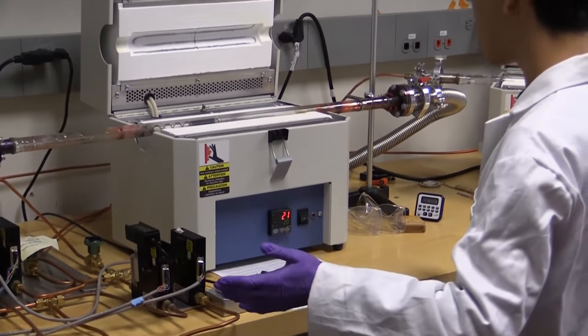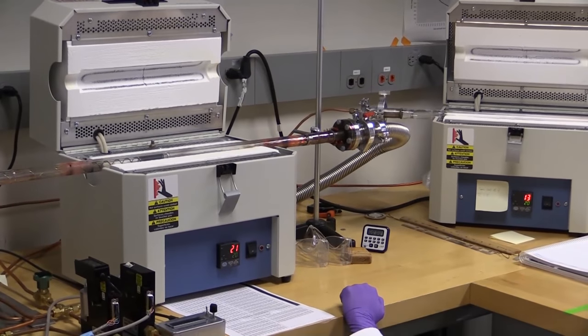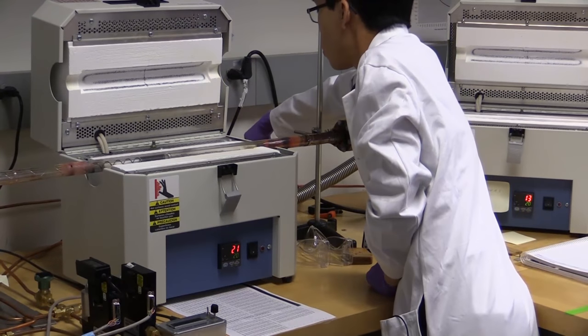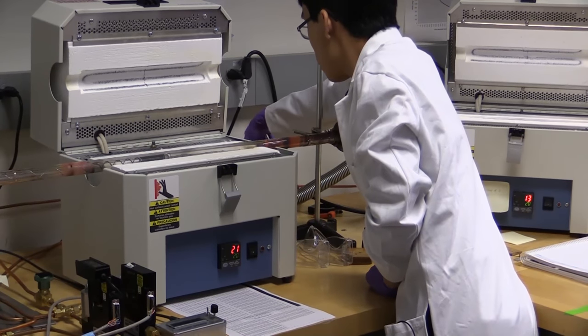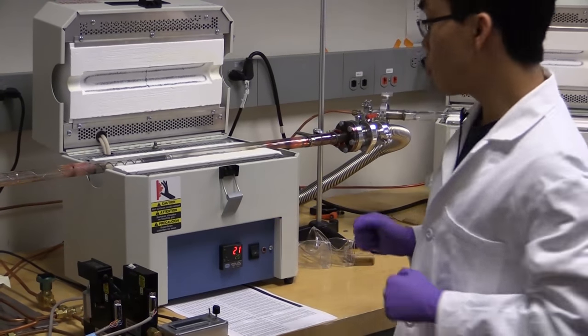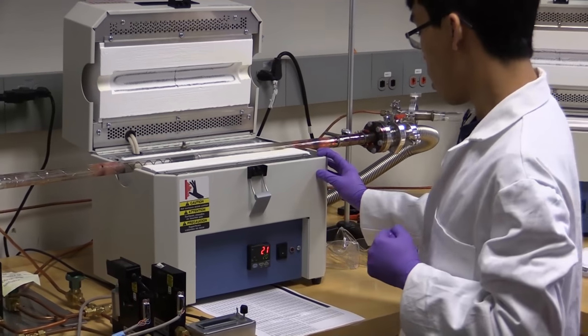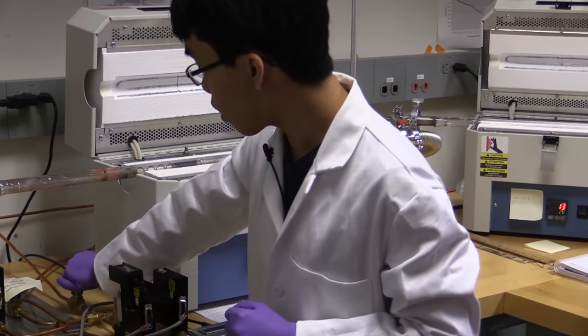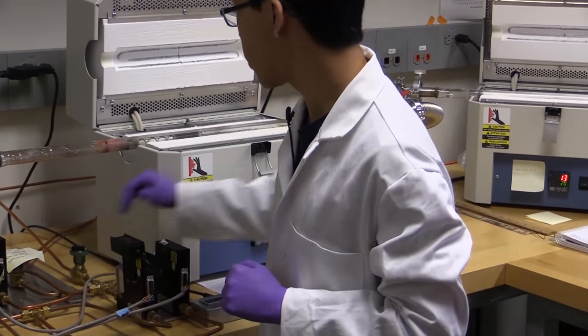Once that's together, I'll go ahead and turn on the vacuum down here. A bit loud. And open this valve. Our pump should take our system below one millitorr, or one millionth of an atmosphere. Once that's done, I'll go ahead and pump down part of our gas system with this valve.